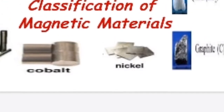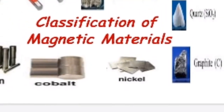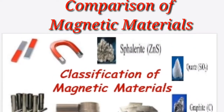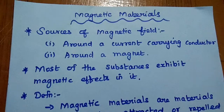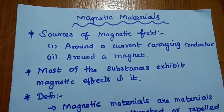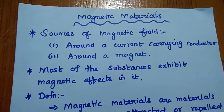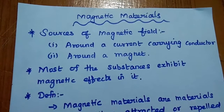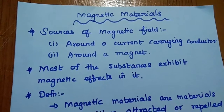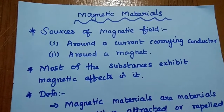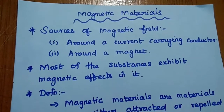Dear students, now we are going to discuss the topic classification of magnetic materials and its comparison. Let's start with the sources of magnetic field. There are two major sources available to produce a magnetic field: one is a current-carrying conductor, and another is a natural magnet.